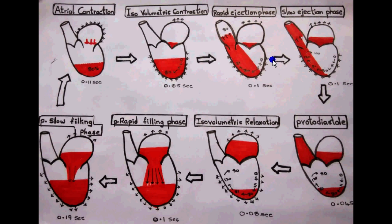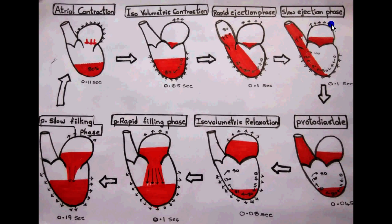Blood continues to be ejected from the ventricle into the aorta, but not as rapidly, because the pressure inside the ventricle drops slowly. So this phase is called the slow ejection phase. Even during the rapid ejection phase and slow ejection phase, the atria still relax as they are continuously receiving blood from the lungs.